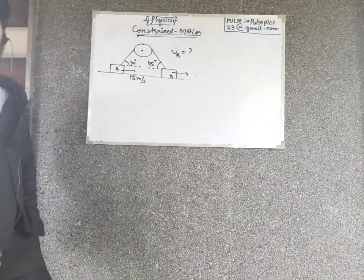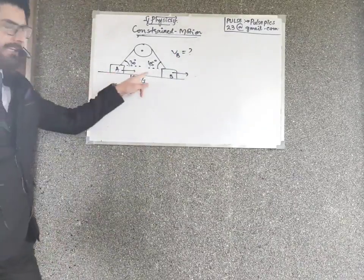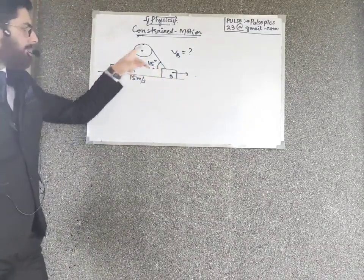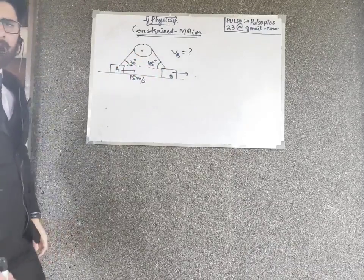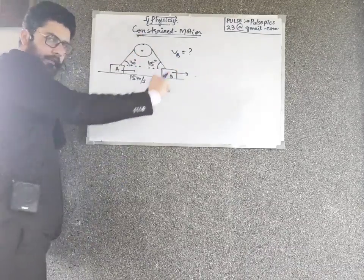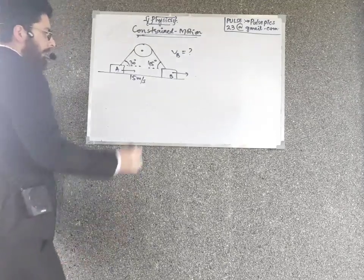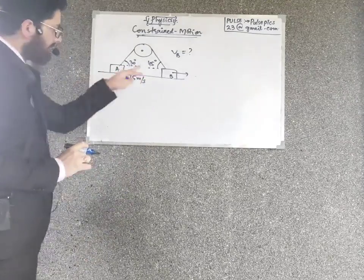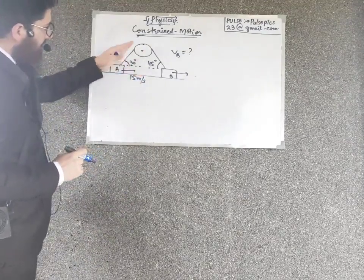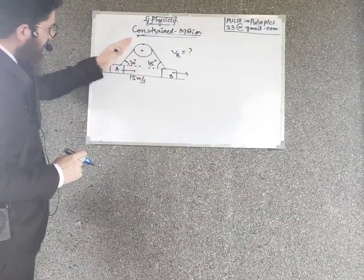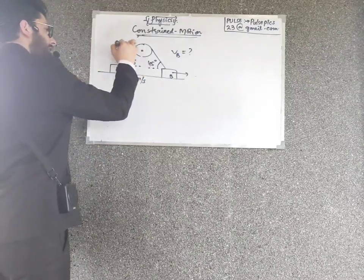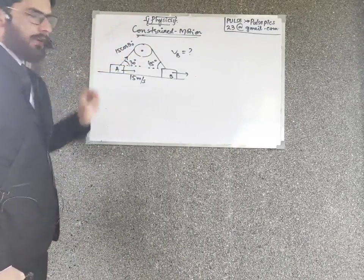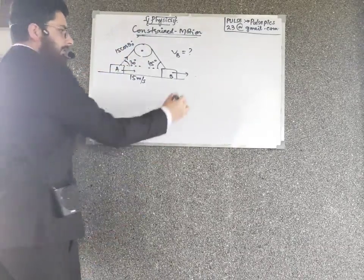This is a very easy question. This block is going forward, and they are connected by one string passing over the pulley. The velocity of block A — 15 meters per second — is not along the length of the string, so I resolve it. The component of 15 meters per second along the string is 15 cos 30.